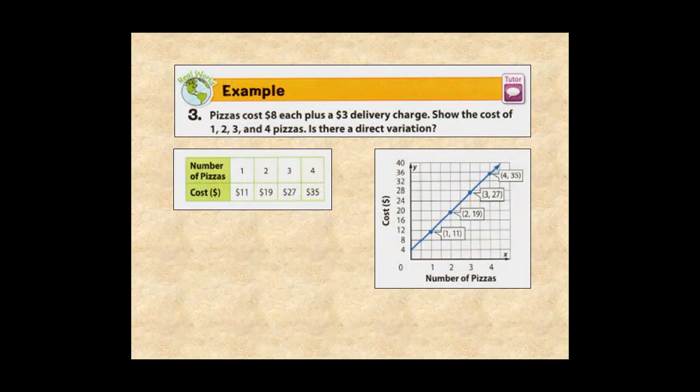In example 3, pizzas cost $8 each, plus a $3 delivery charge. So, the cost of pizza is represented by the equation y equals 8x plus 3. This doesn't have the form y equals kx, so it's not a direct variation.